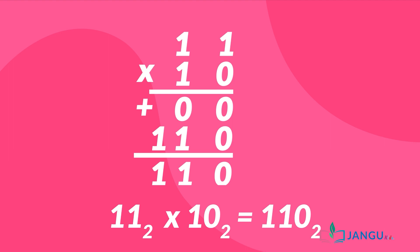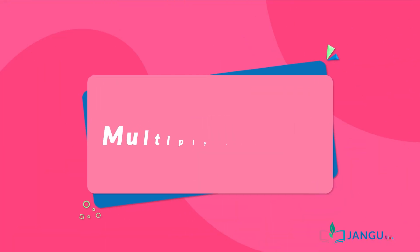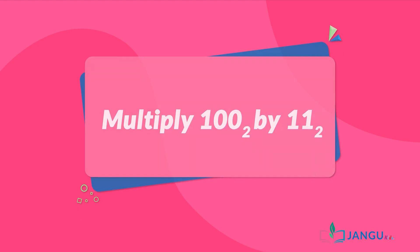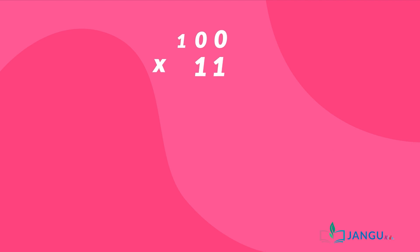Let us look at another example, but this time around we will do it together. I hope you're ready. Multiply 100 in base 2 by 11 in base 2. What is the first thing that we need to do? Yes, we write down the numbers one below another according to their place value. What is the next step?